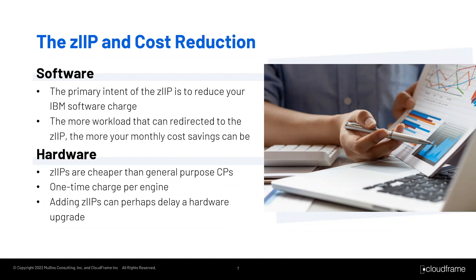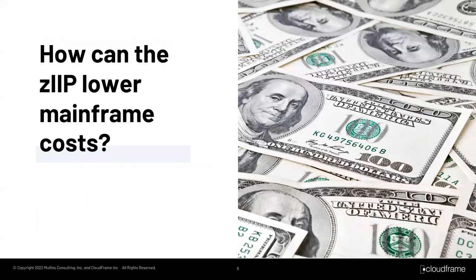Most mainframe software contracts are tied to the processor size of the machine, and cost rises as capacity rises. But if capacity can be redirected to a ZIP specialty processor, that workload doesn't factor into licensing charges. On the hardware side, specialty processors are significantly cheaper to acquire than general-purpose CPs. A standard mainframe CP can cost more than half a million US dollars, but the list price of a specialty processor is about a quarter of that — and street price may be even less. Specialty processors are purchased for a one-time charge per engine, including no-charge replacement by faster ZIP engines when you upgrade to a new machine.